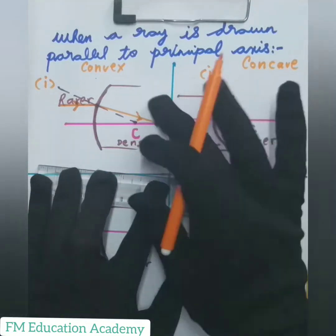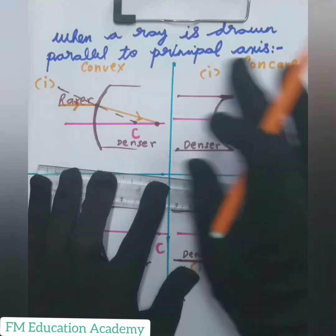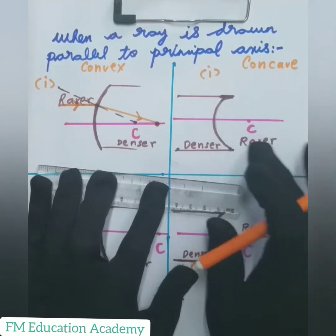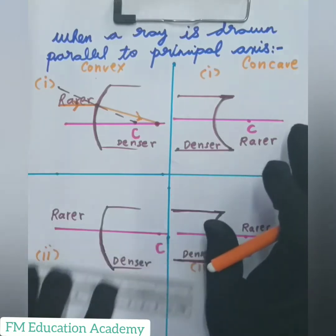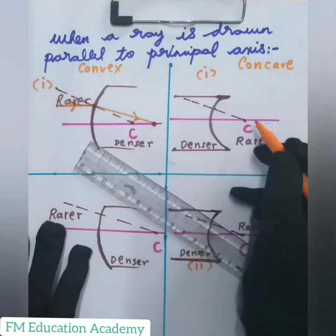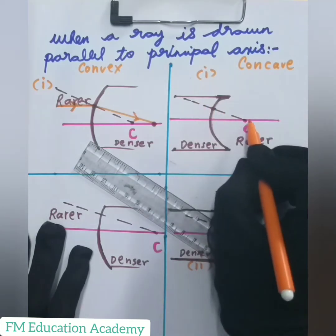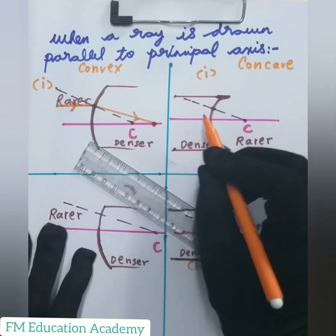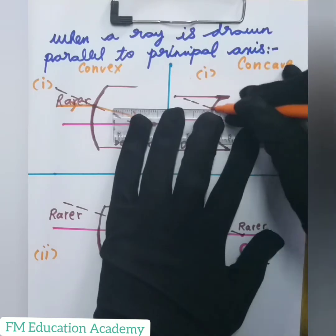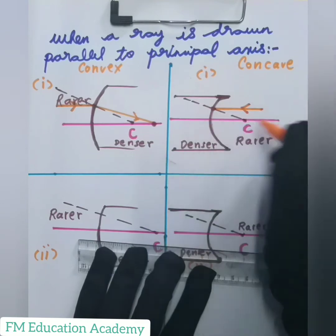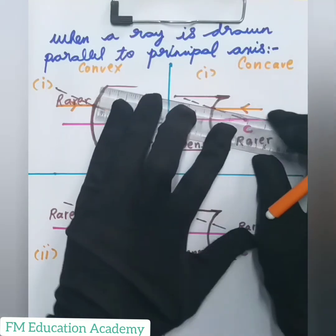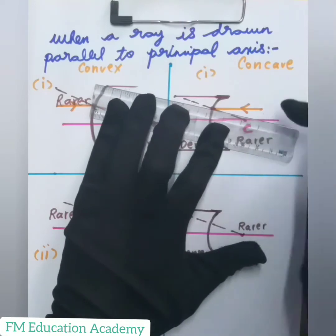What happens in a concave surface? This is my concave surface — remember, convex and concave surfaces are different. Whenever a ray travels from rarer medium to denser medium in the case of a concave surface, this is my normal because it passes from center of curvature to a point on the lens. The ray bends towards the normal, hitting the concave surface and bending in this direction.